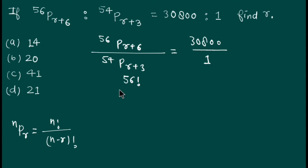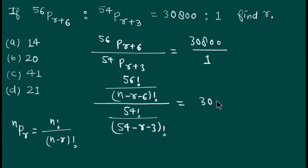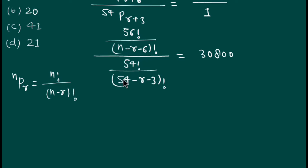For 56Pr+6, it is 56 factorial divided by (n minus r) factorial, where r is r+6, so it becomes (56 minus r minus 6) factorial. This whole term is divided by 54Pr+3, which gives 54 factorial divided by (54 minus r minus 3) factorial. This whole term equals 30800.